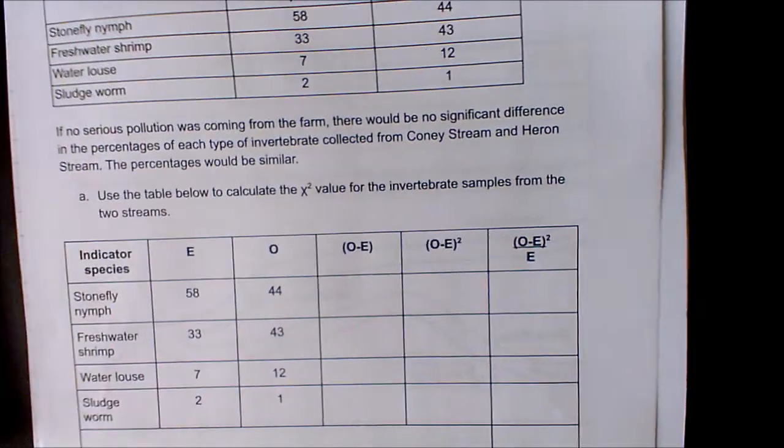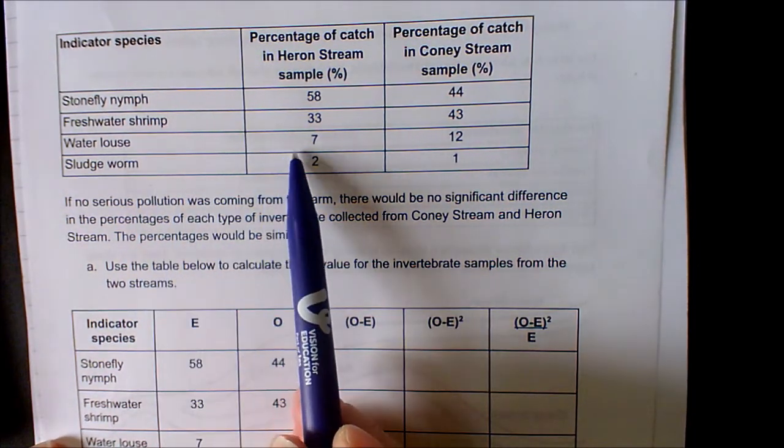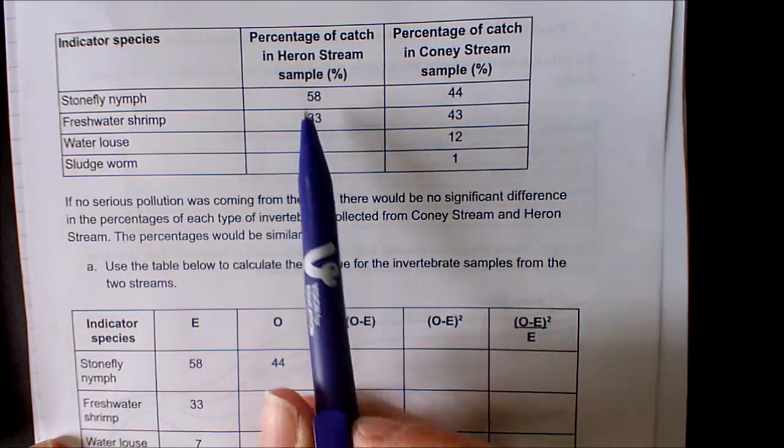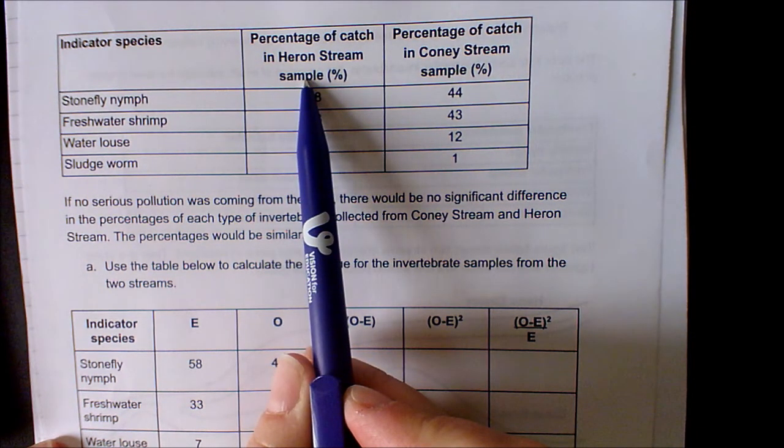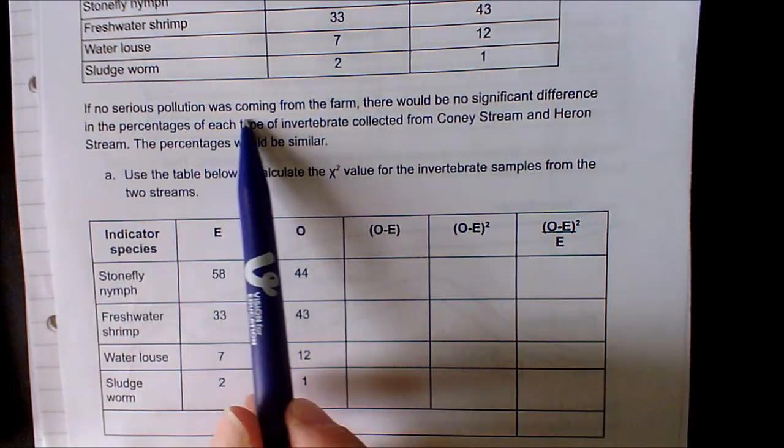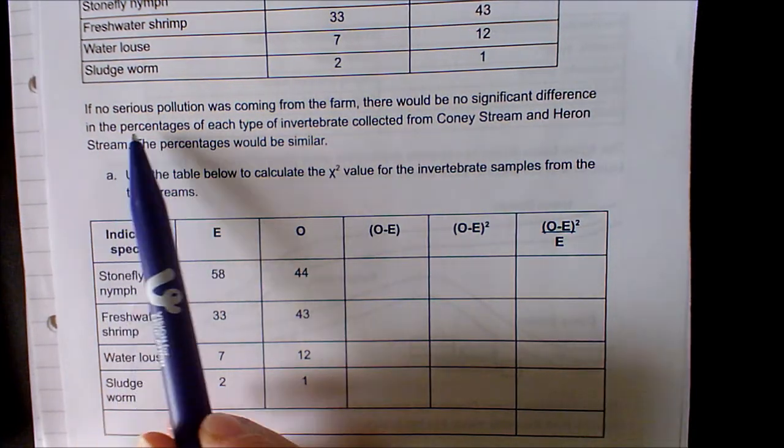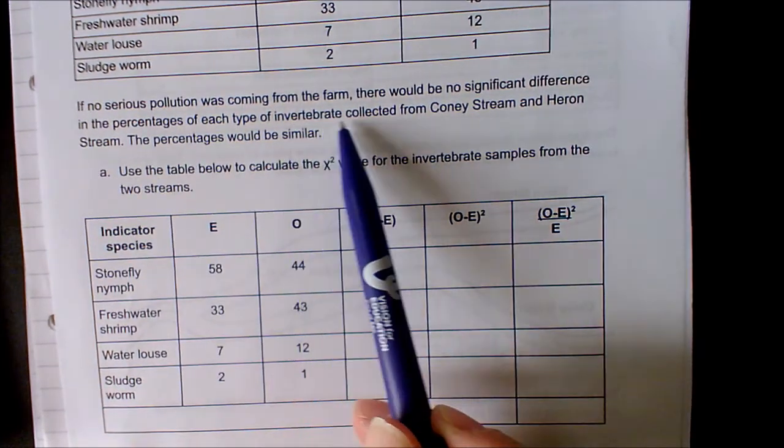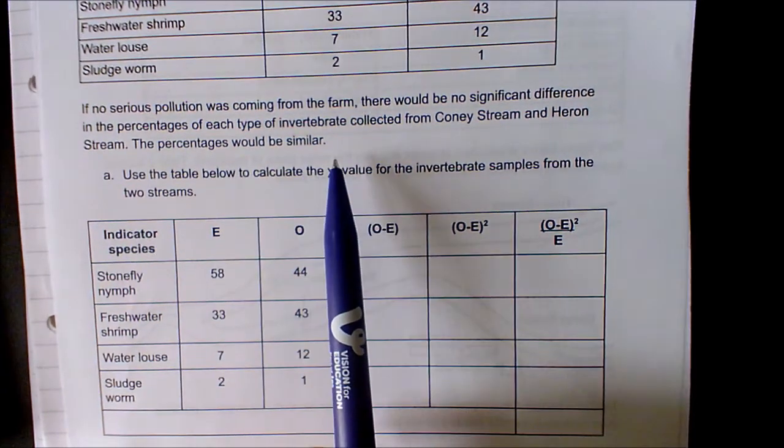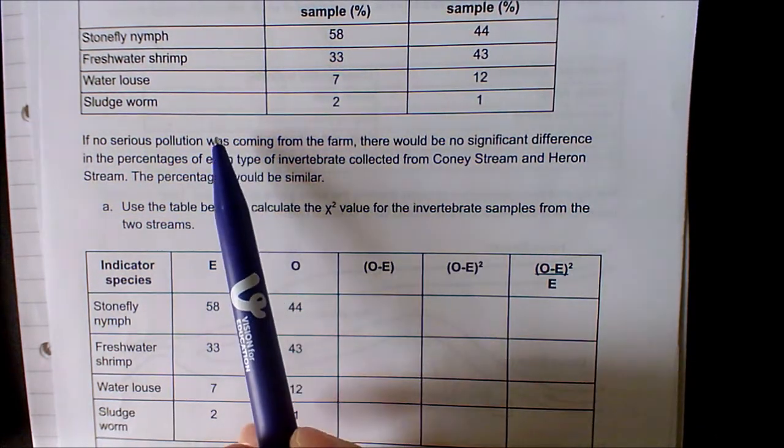So if we look at our results table, they've given us the four indicator species and the percentage of each present at both the Heron Stream sample and the Coney Stream sample. If no serious pollution was coming from the farm, there would be no significant difference in the percentages. The percentages would be similar.